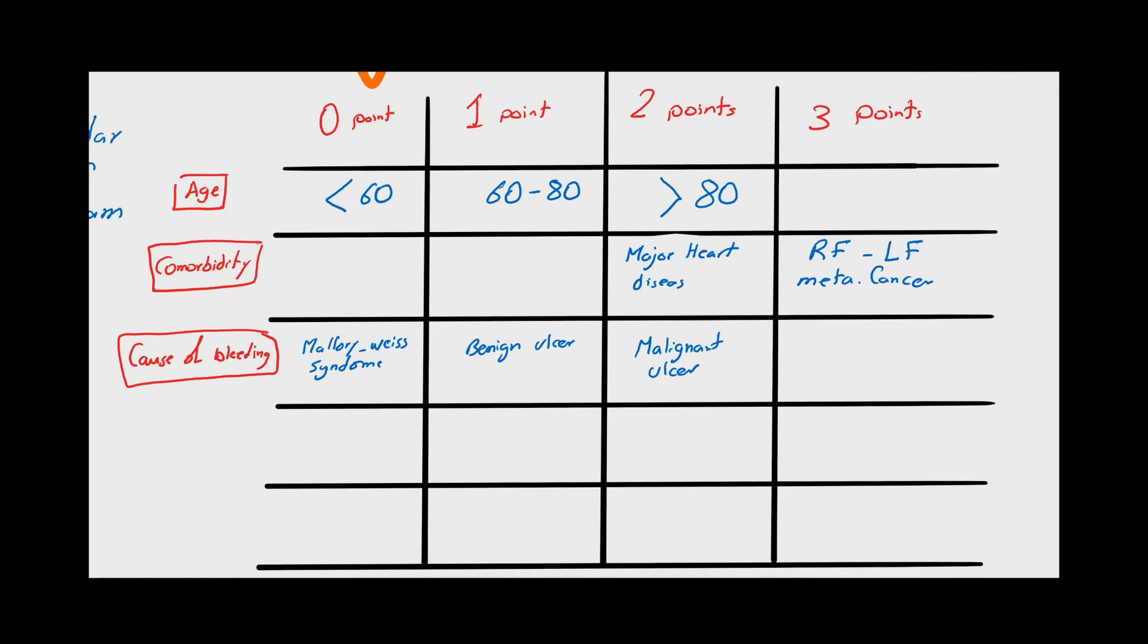The fourth category is the vital signs on admission. Normal vital signs are assigned 0 points, while tachycardia with more than 100 beats per minute is assigned 1 point, and complete picture of shock with hypotension, in which systolic blood pressure below 100 mmHg, is assigned 2 points. The last category of the score is the endoscopic findings, where the presence of active bleeding Forrest 1 or recent bleeding Forrest 2 are assigned 2 points. The sum of all the previous 5 categories is assigned a number between 0 and 11.